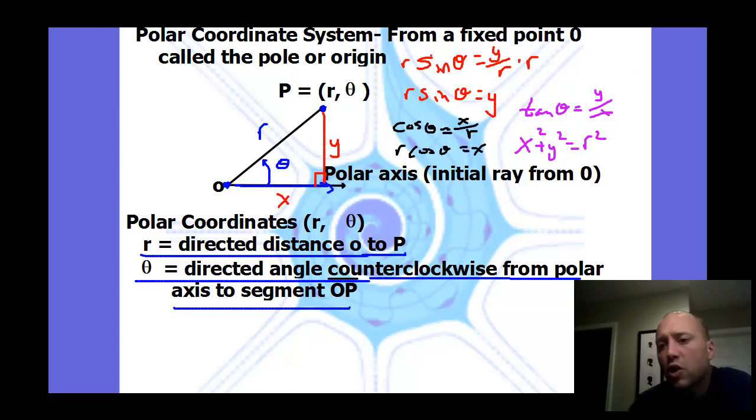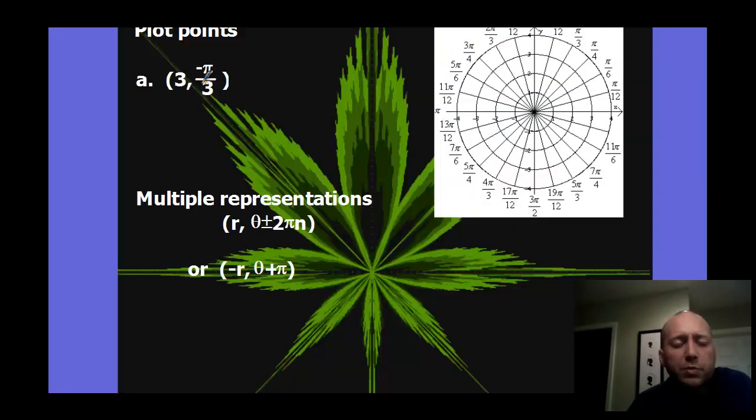So we can write down these formulas, which we're going to use again in a second. Those are the four formulas we'll be using to convert back and forth between rectangular and polar. We're just basically plotting points using our trig, our theta, and our directed distance r, which is like our hypotenuse of our triangle. So let's plot these points.